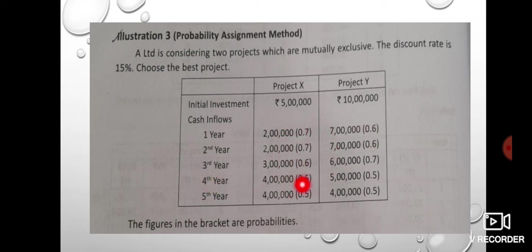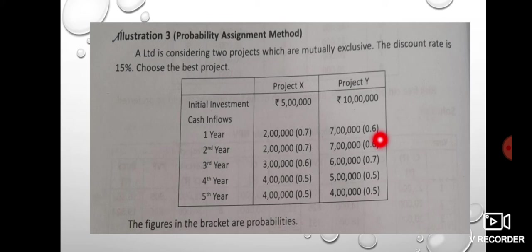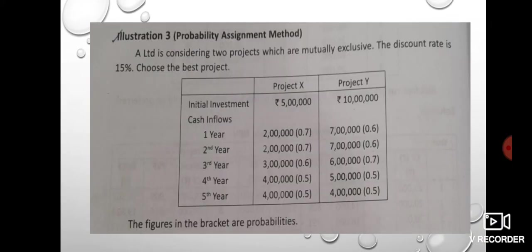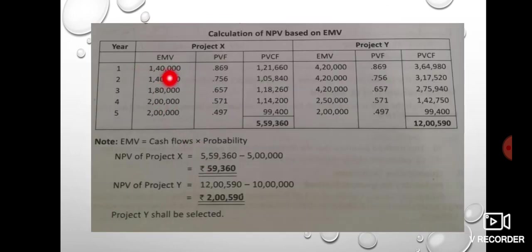The figures in brackets are probability factors. If you have cash flows, you multiply the figure in the table by the probability factor to get the EMV. The heading for our calculation is: NPV based on EMV, with columns for EMV, PVF, and PVCF for both Project X and Project Y.